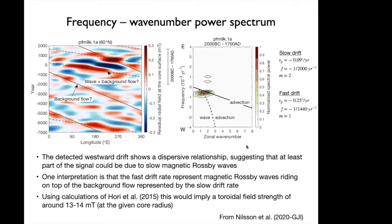Turning to the frequency-wavenumber power spectrum, the slow drift rate of 0.09 degrees per year corresponds to a frequency of ~1/2000 with M=2 structure. The fast drift rate, M=1, has a higher frequency. This shows a dispersive relationship — it does not follow the linear advection line, nor does it exactly follow Hyde's predicted cubic wave propagation relationship. Nevertheless, the dispersive character suggests waves are somehow involved. Our running hypothesis is that the fast drift rates represent magnetic Rossby waves riding on top of the background flow represented by the slow drift rate.